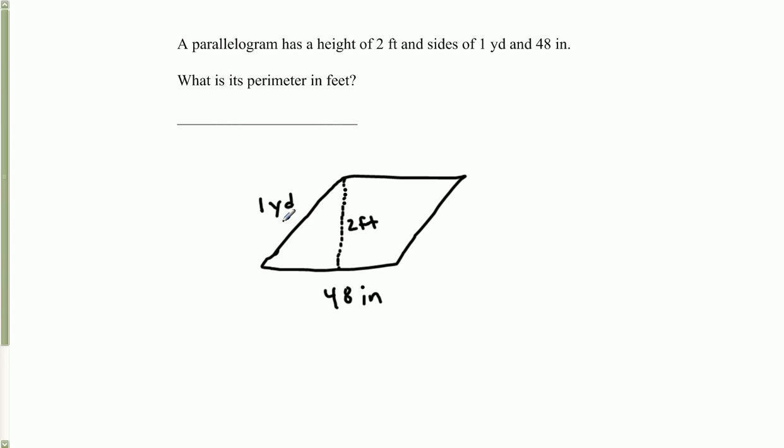Okay, so I know that in 1 yard there's 3 feet, so automatically I can change this here. This is now 3 feet. So if this side is 3 feet, the line parallel to it is also 3 feet.